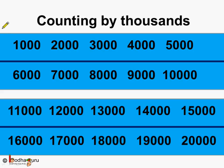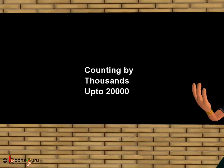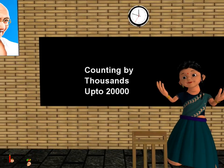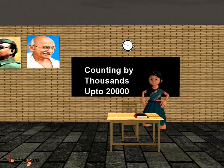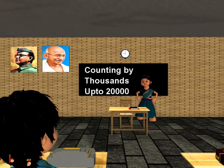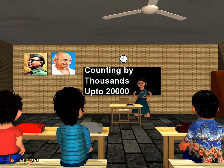So this is called counting by thousands. Understood? That's all for now. Bye-bye, children. Thank you.